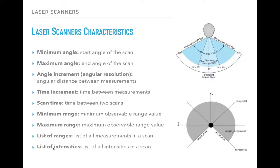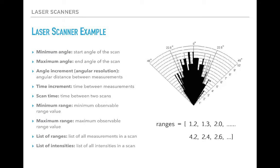We also get a list of intensities coming back from the laser scanner. As an illustrative example, each laser beam hitting an obstacle will represent one range value. In ROS, you will see that we can have an array of ranges — for example, the minimum angle might return 1.2, the next angle 1.3, then 2.0, and so on, depending on the distance that bounces back after hitting an obstacle. This distribution of ranges can be collected using ROS software APIs and processed to avoid obstacles or build a map.